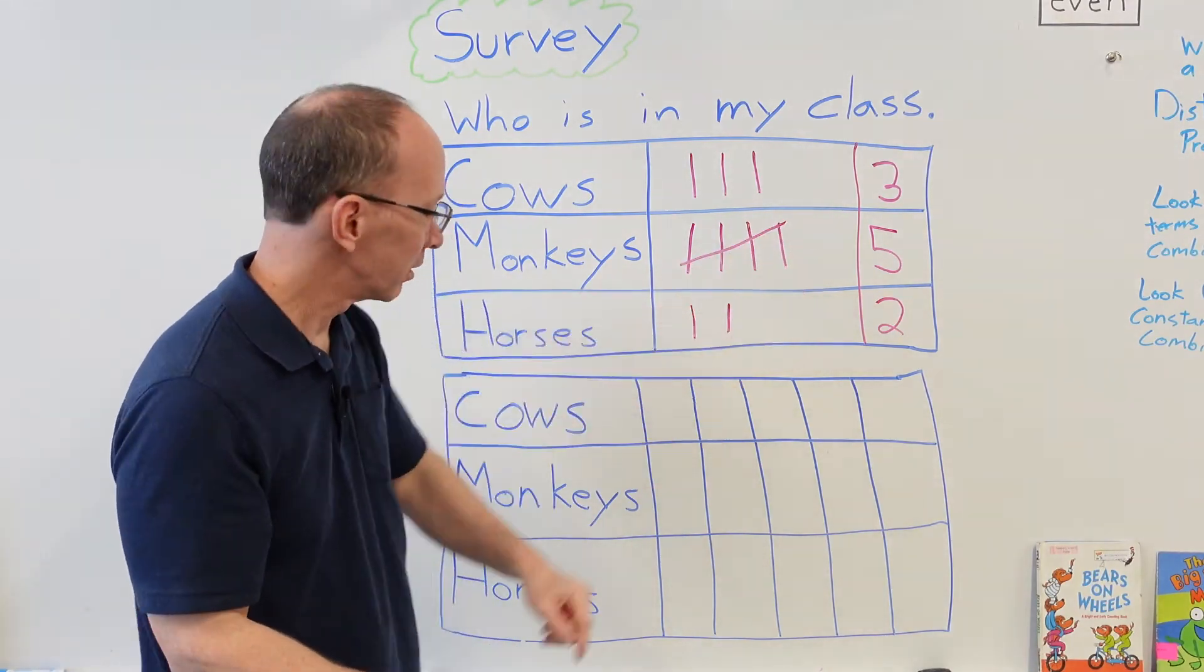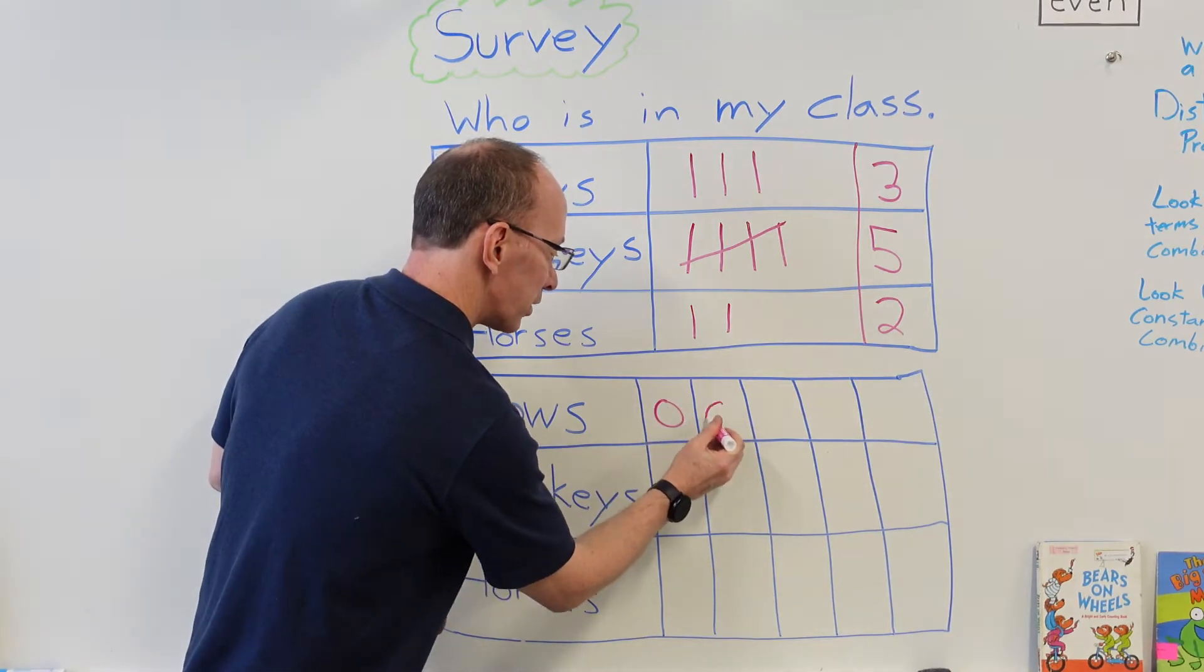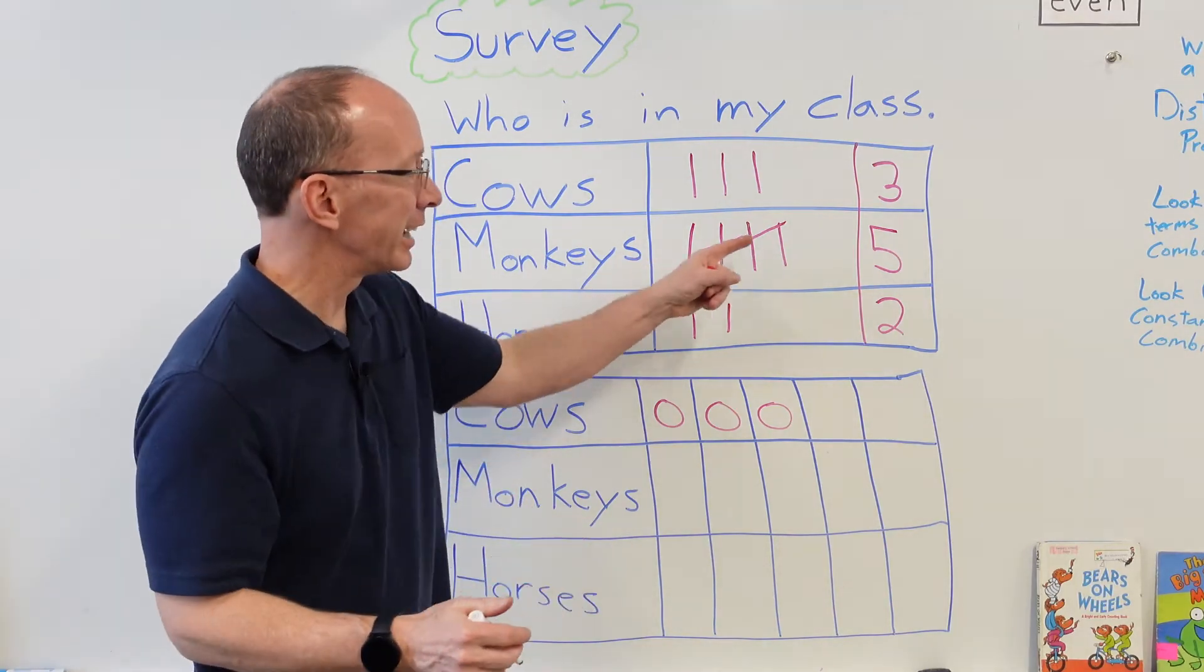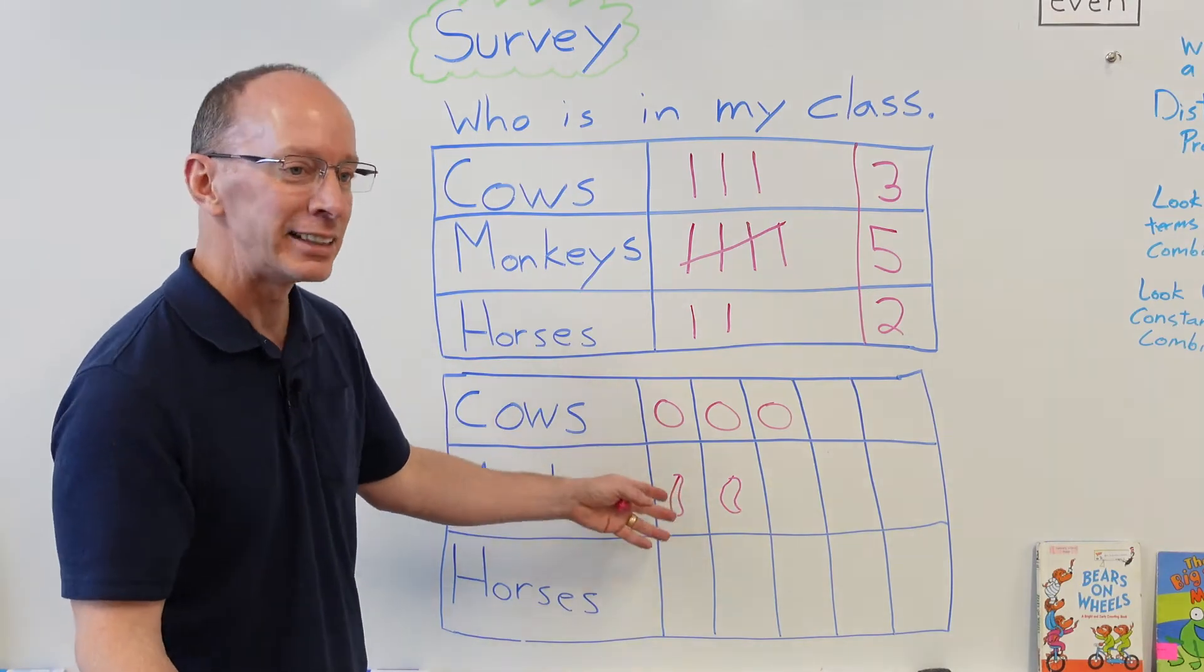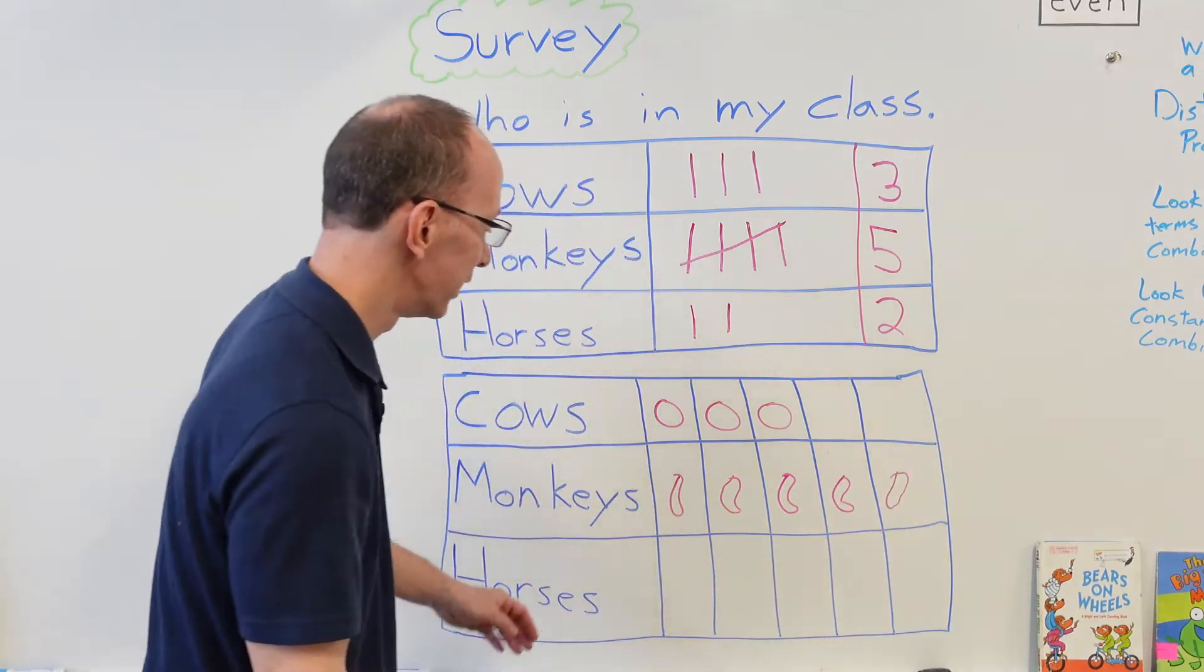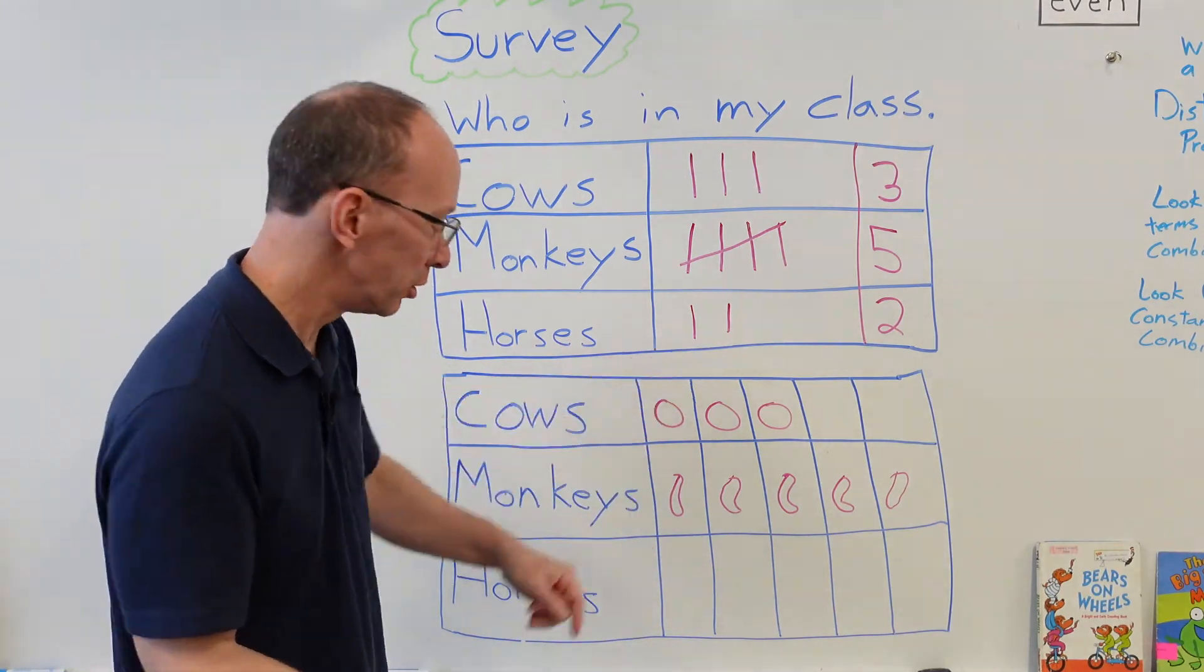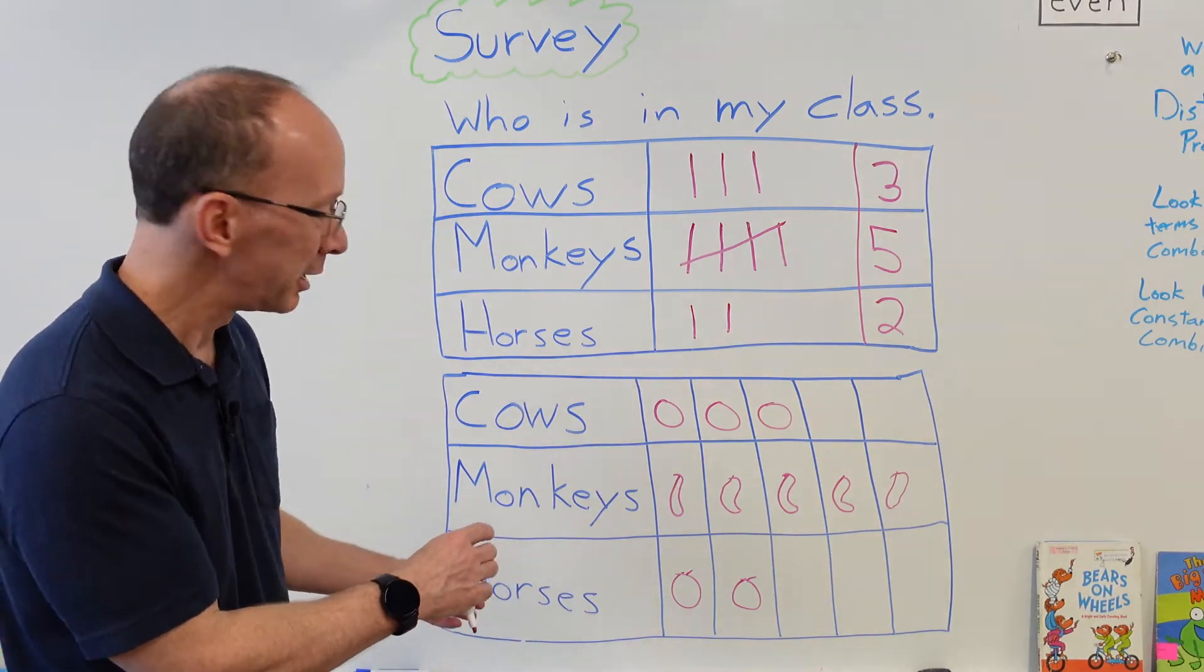So how many cows do we have? We had three cows. Now if you wanted to, you could draw faces of cows in there—it's up to you. I'm just going to draw some circles right here: one, two, three. Monkeys—okay, they want me to draw bananas for them. How many bananas do I have to draw? Five of them. The bananas representing the monkeys. I have to draw five of those. Horses, you want me to draw an apple? They want me to draw some apples. How many apples do I need to draw? Two. The apples represent the horses.